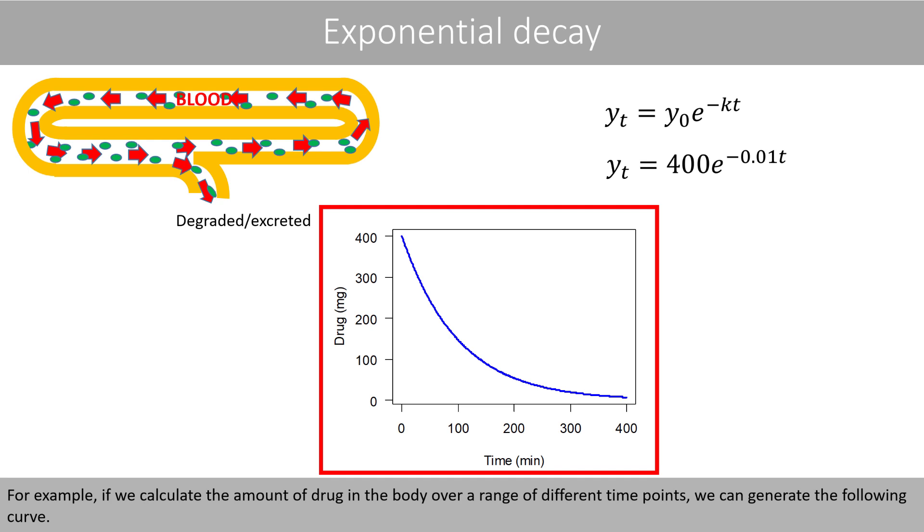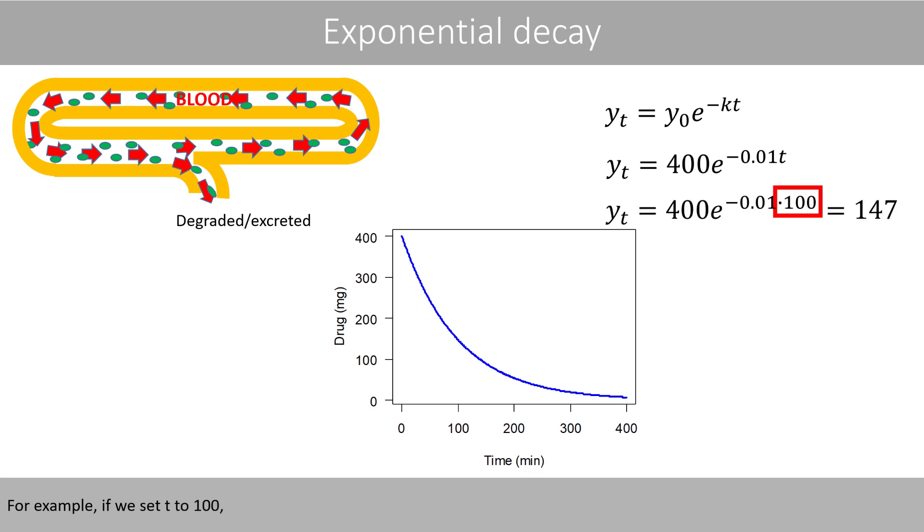For example, if we calculate the amount of drug in the body over a range of different time points, we can generate the following curve. For example, if we set t to 100, we see that there is about 147 mg of the drug left in the body. This corresponds to the value of the curve at 100 minutes.